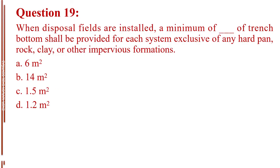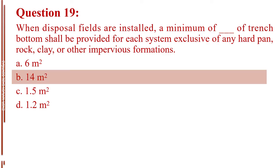Question number 19. When disposal fields are installed, a minimum of blank of trench bottom shall be provided for each system exclusive of any hard pan, rock, clay, or other impervious formations. Letter A, 6 square meters. Letter B, 14 square meters. Letter C, 1.5 square meters. Letter D, 1.2 square meters. The answer is Letter B, 14 square meters.